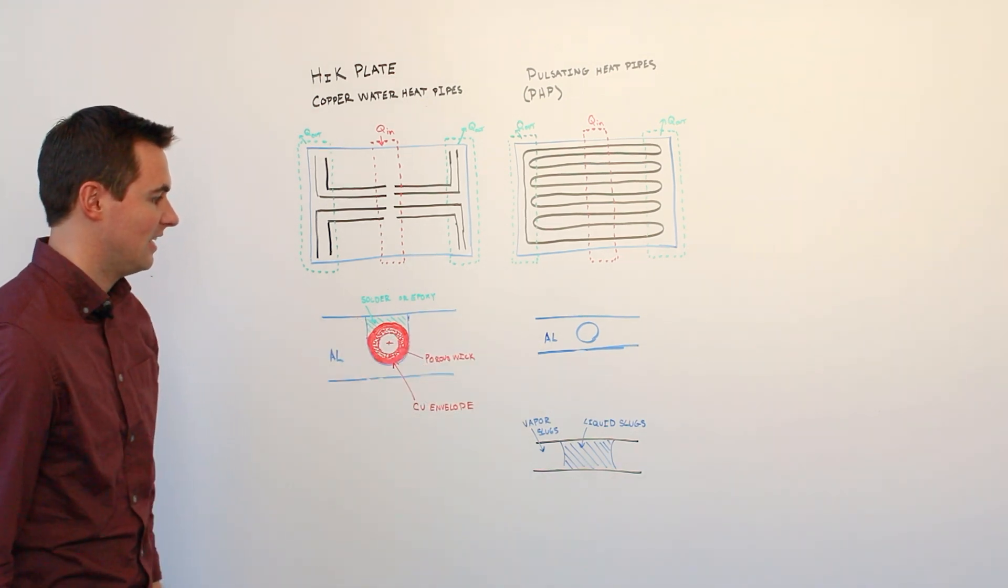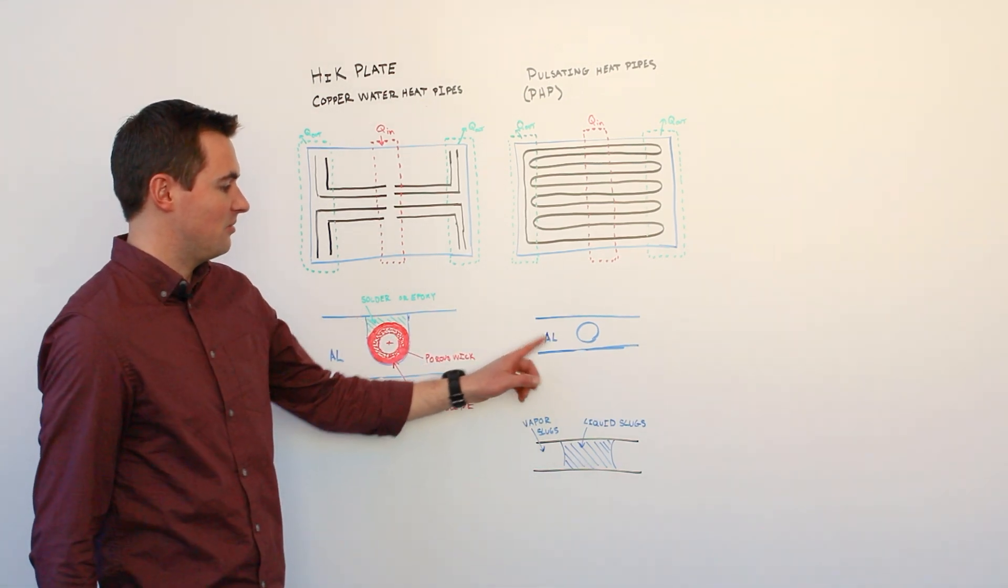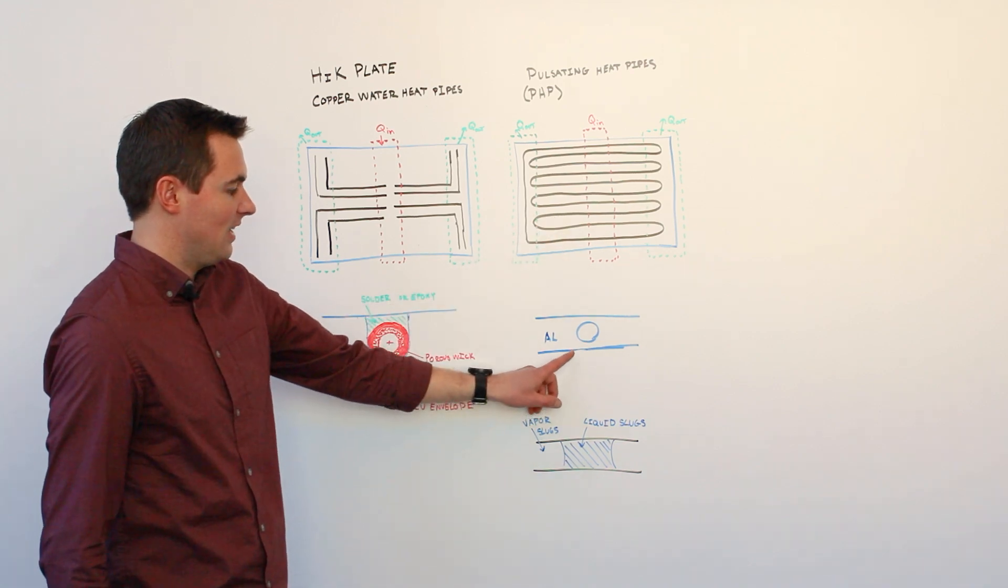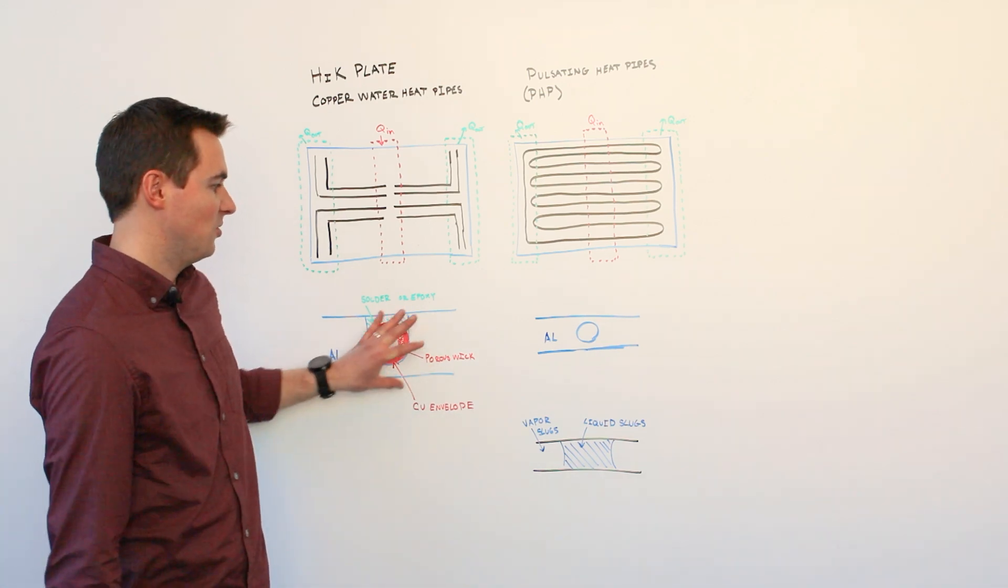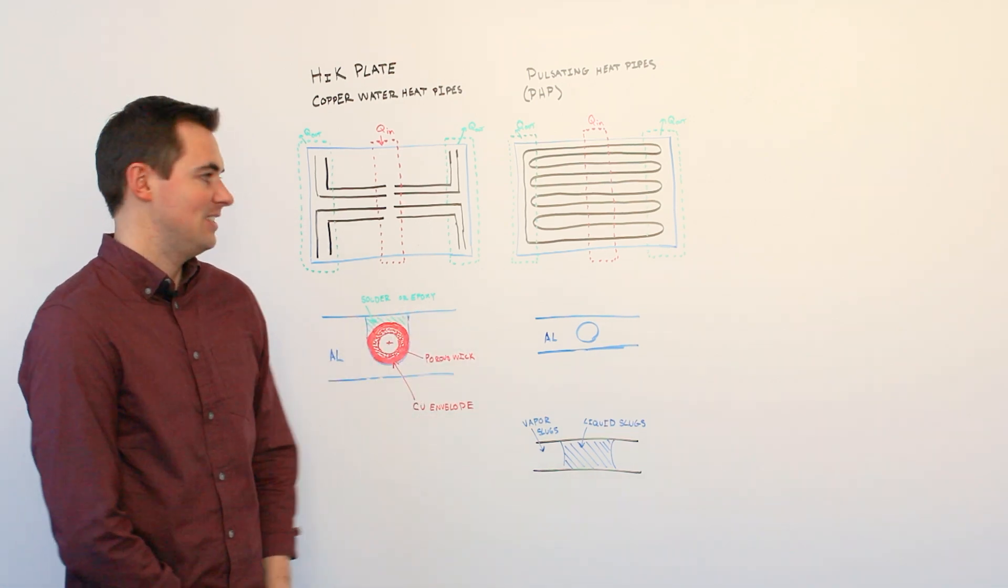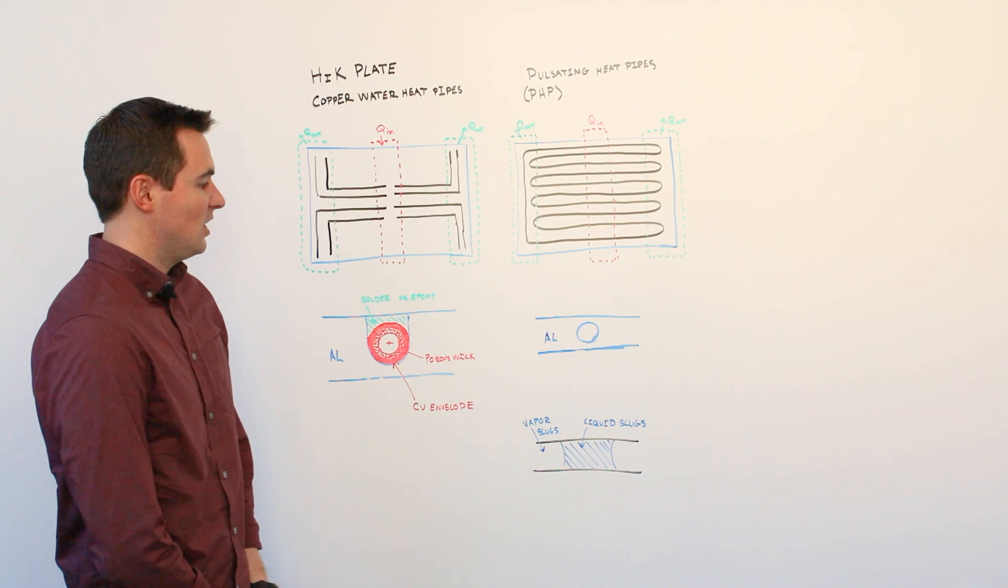Whereas pulsating heat pipes can have very tight turn radii and, depending on the manufacturing method, can handle complex geometries where conventional heat pipes may struggle to meet your keep-in requirements.